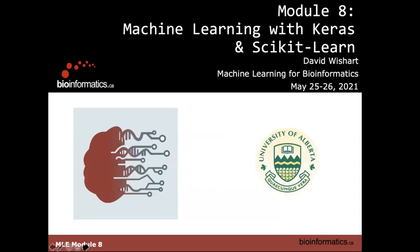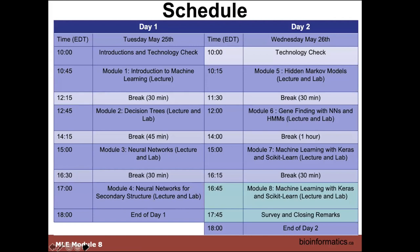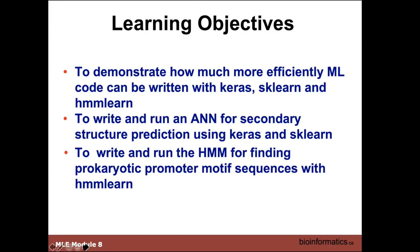This module, along with the previous one, is focusing on using machine learning with Keras and Scikit-Learn — to demonstrate how you can use these powerful modules available through Google to make your life easier when doing machine learning. We've already shown how we could use Keras and Scikit-Learn for the iris classification problem. Here, we're going to demonstrate how we can use it in secondary structured prediction with an artificial neural net, and also show how we can use HMM-Learn to do prokaryotic promoter motif recognition.